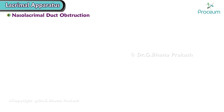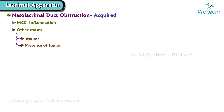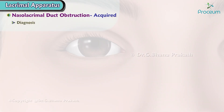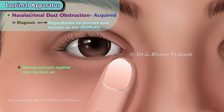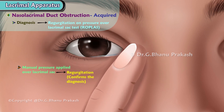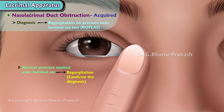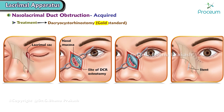Nasolacrimal duct obstruction is the most common disorder of the lacrimal apparatus; it can be acquired as well as congenital. Acquired nasolacrimal duct block is most commonly caused by inflammation; other causes include trauma, the presence of a tumor, or iatrogenic causes. It is diagnosed by regurgitation on pressure over the lacrimal sac — manual pressure applied over the lacrimal sac leading to regurgitation confirms the diagnosis. Treatment: Dacryocystorhinostomy (DCR) is the gold standard treatment.